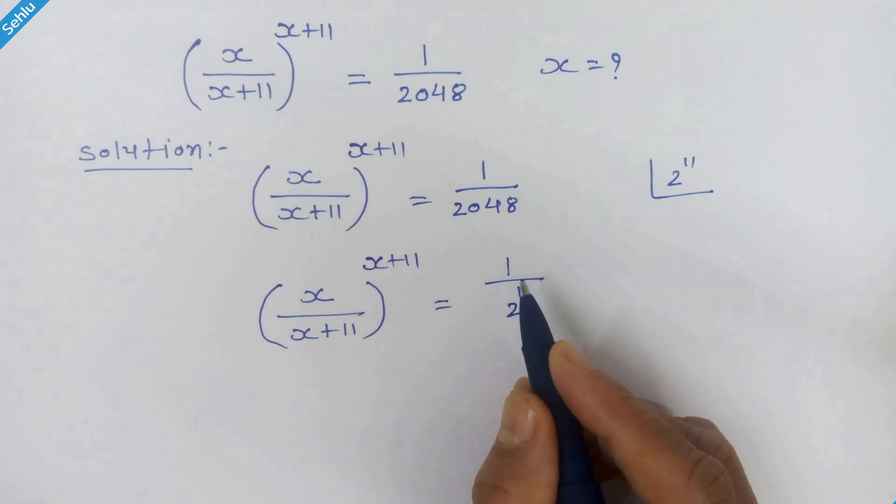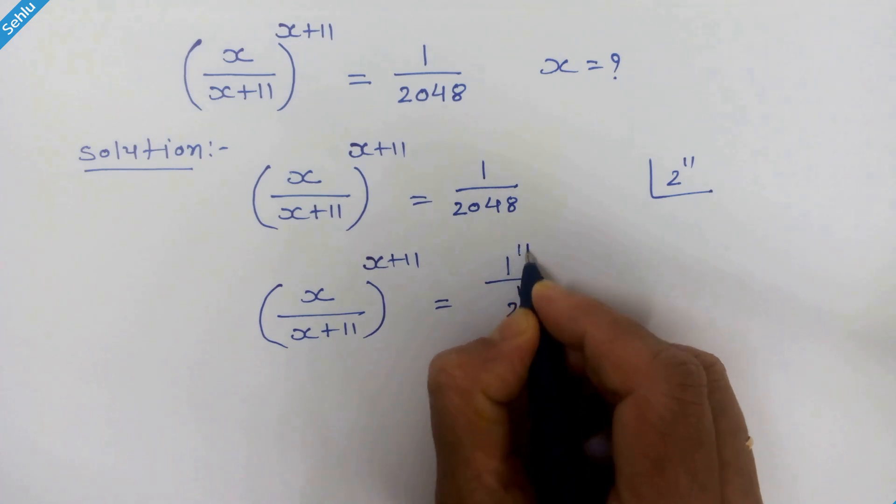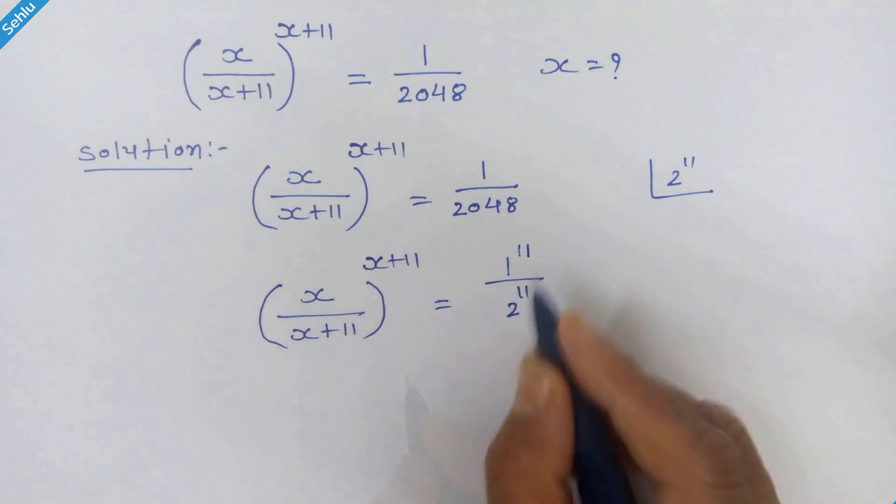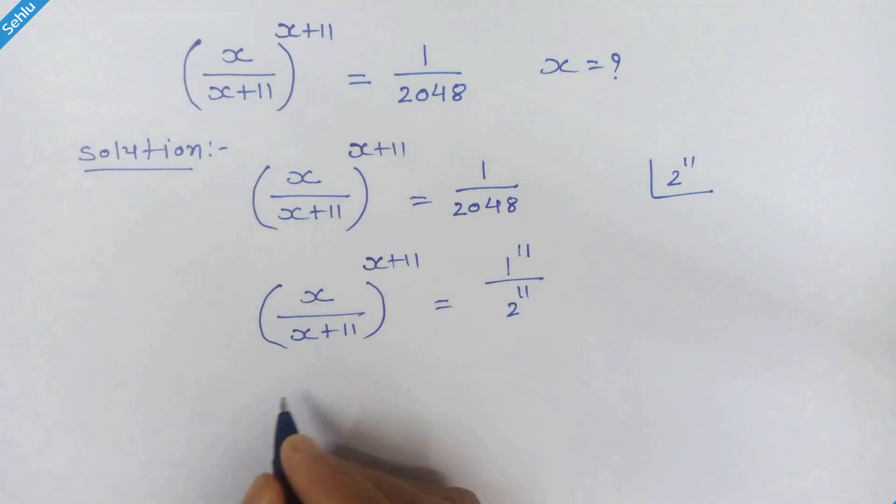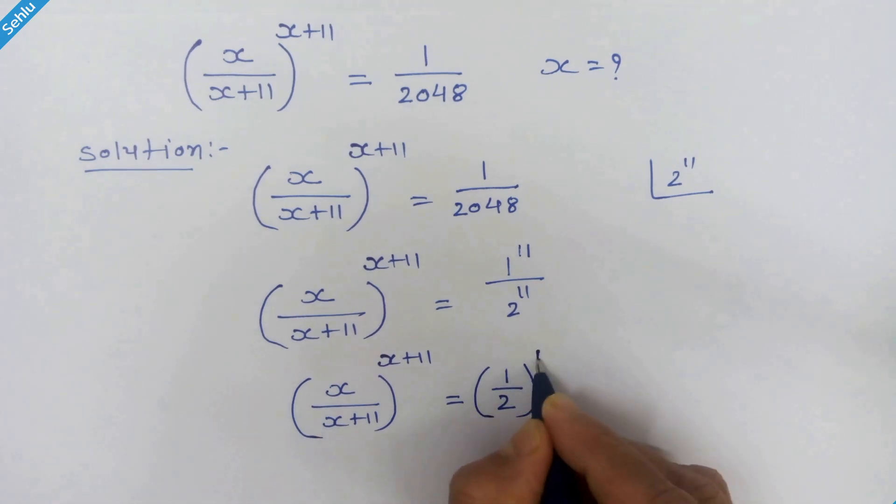Here one can have any number as an exponent without changing its value. So we can put 1 raise to 11 in place of 1. Now they have same exponent. So we can combine the exponents. Is equal to 1 upon 2 whole raise to 11.